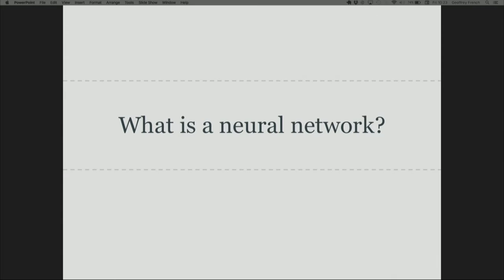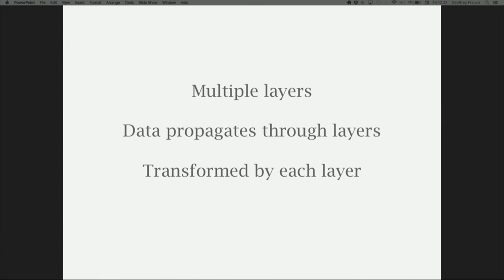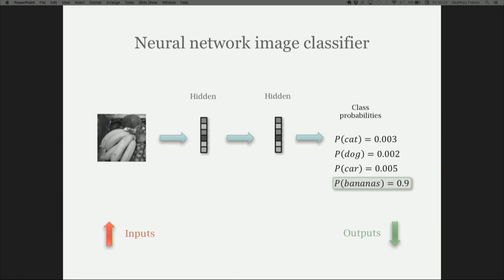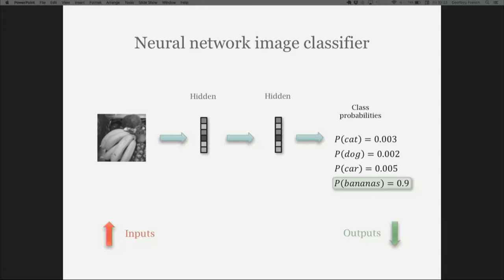What is a neural network? It has multiple layers, and data propagates through each layer and is transformed as it goes through. We might start with an image of a bunch of bananas — it goes through the first hidden layer and gets transformed into a different representation, then transformed again into the next hidden layer, and finally we end up with a probability vector. All the values in that vector sum to one, and our predicted class is the element with the highest probability.